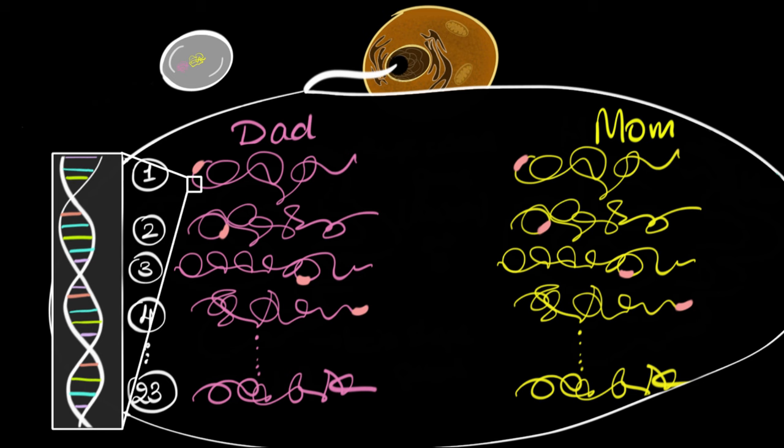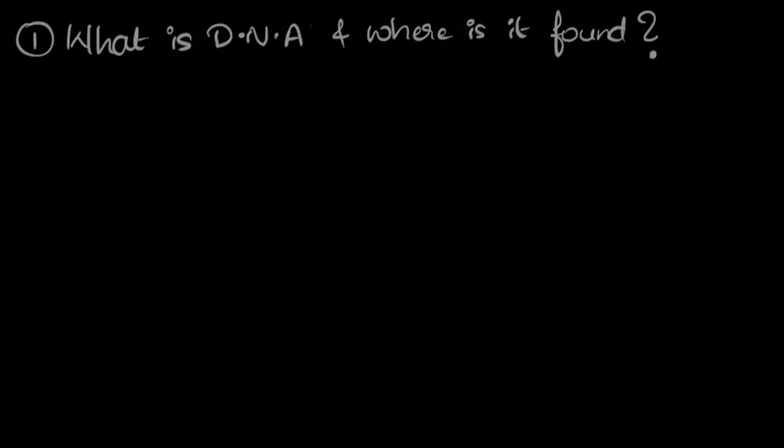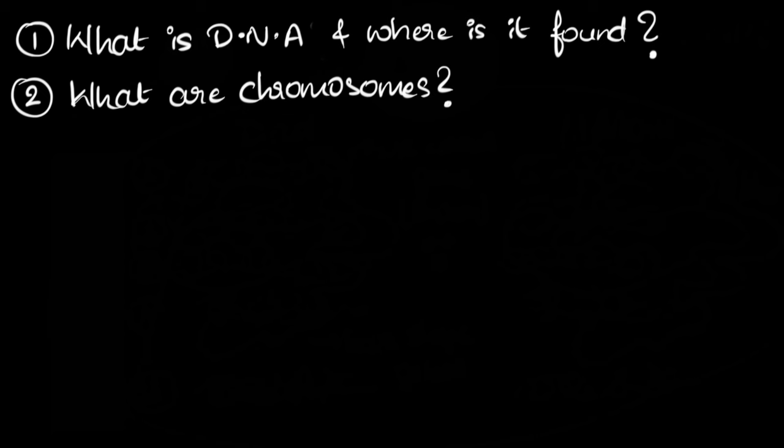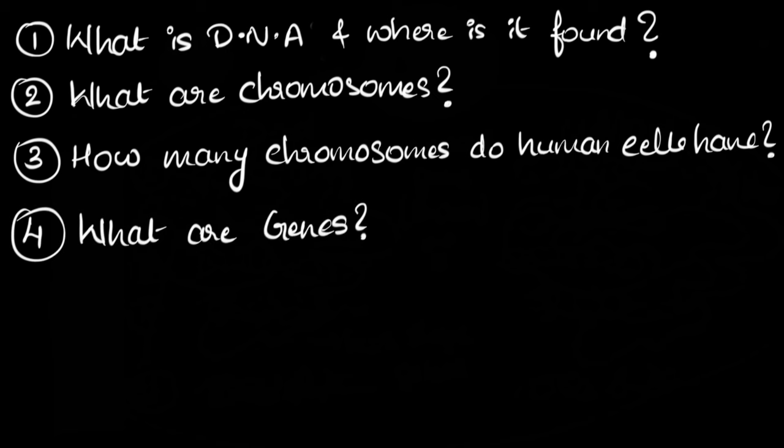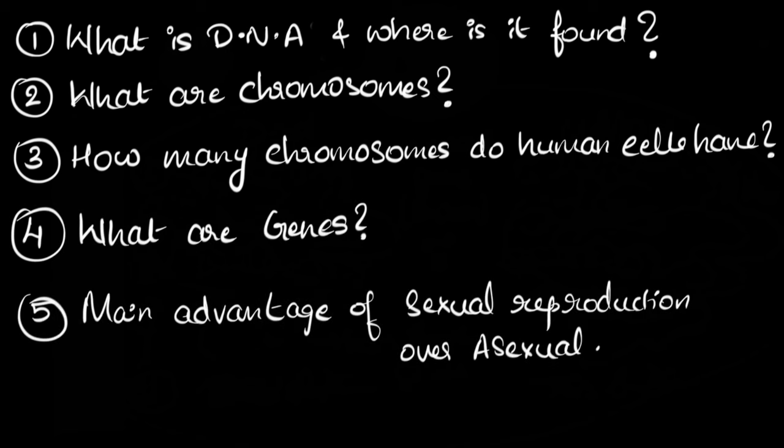So let's see if we can summarize and recall what we learned. So here are some questions for you. Can you recall what a DNA is and where is it found exactly inside a cell? What are chromosomes? How many chromosomes do human cells have? What are genes? And finally, what is the main advantage of sexual reproduction over asexual reproduction? If you have difficulty in answering any of these, don't worry, just go back and revisit the video.